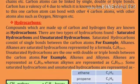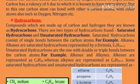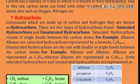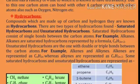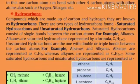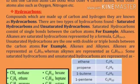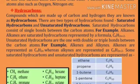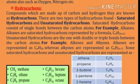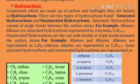Examples of saturated hydrocarbons: methane CH₄, ethane C₂H₆, propane C₃H₈, butane C₄H₁₀, pentane C₅H₁₂, hexane C₆H₁₄, heptane C₇H₁₆, octane C₈H₁₈, nonane C₉H₂₀, and decane C₁₀H₂₂. All saturated hydrocarbons are represented by single bonds.